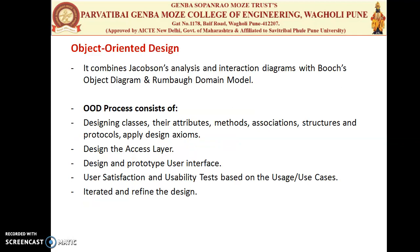The next component is object-oriented design. Booch provides the most comprehensive object-oriented design methodology. The unified approach combines this by utilizing Jacobson's analysis and interaction diagram with Booch's object-oriented diagram and Rumbaugh's domain model. Object-oriented design consists of different stages: designing a class with its attributes, methods, association, structure, protocol, and applying design patterns; designing the access layer; designing the prototype user interface; and listing the user satisfaction and usability tests based on the use cases.